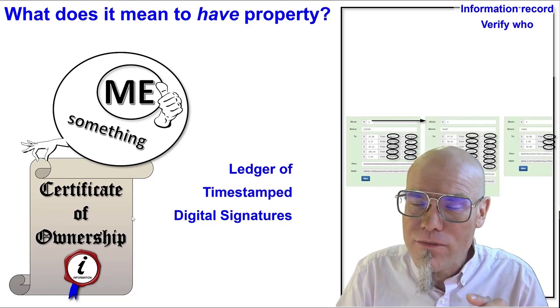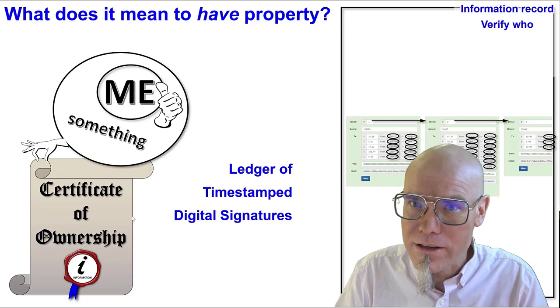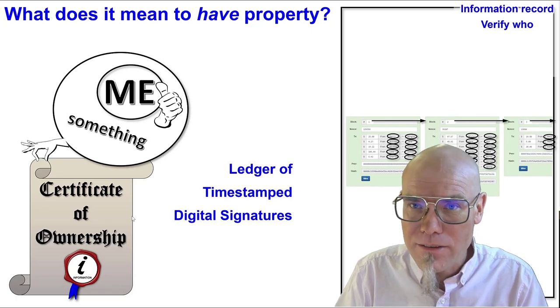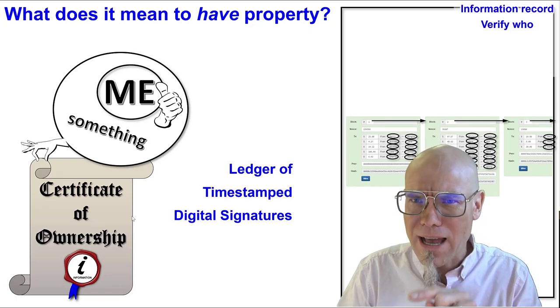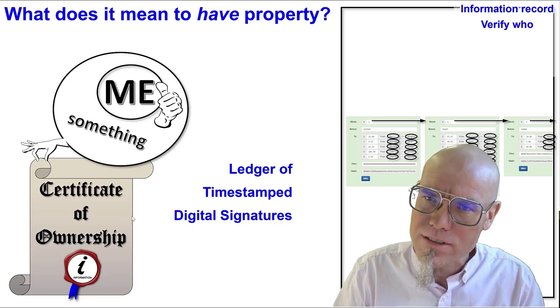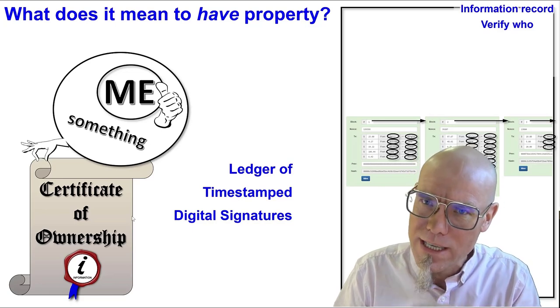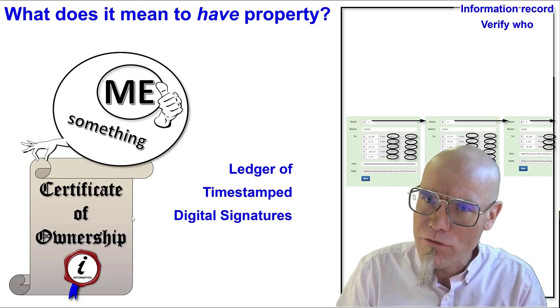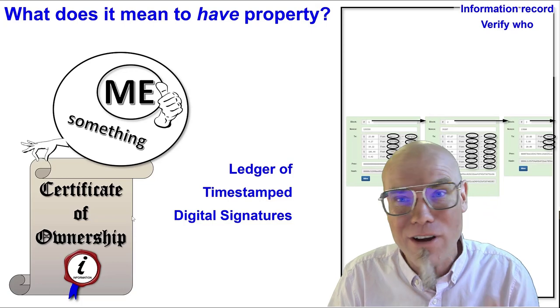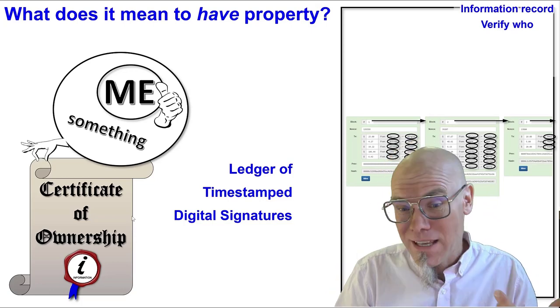And then I need to verify when, so we need timestamps. I gave it to you in the morning and in the afternoon you gave it to somebody else — so we keep track of when things happen, so nobody can cheat with 'I already gave it to you.'